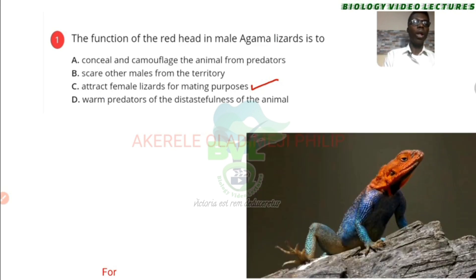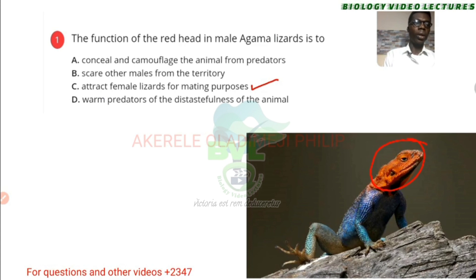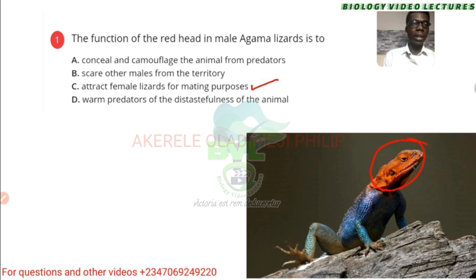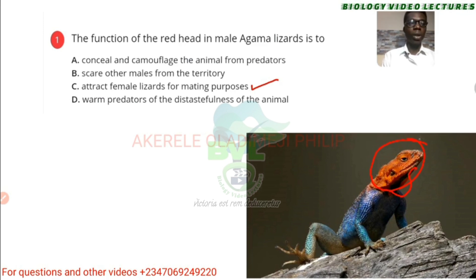The aim of this red head — that red part — is actually to attract females. And there's this thing called the gular fold, which is not really prominent in this picture. That one shows up during anger, when they actually want to fight, when it is trying to claim its territory. But this color of the red head is actually to attract the female during mating.